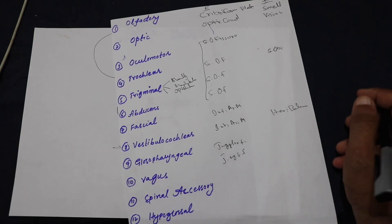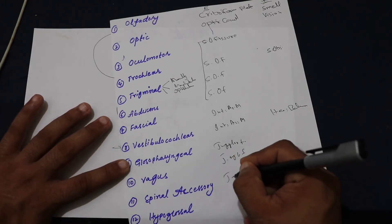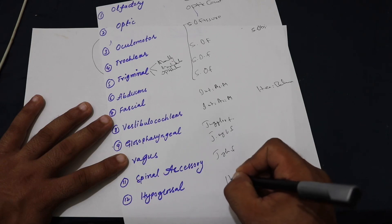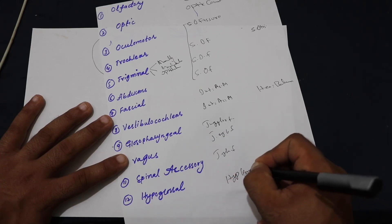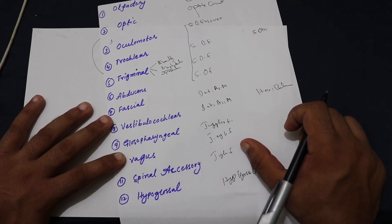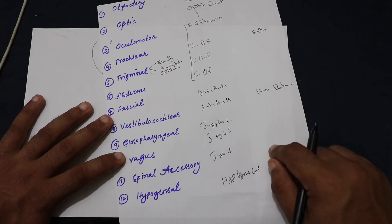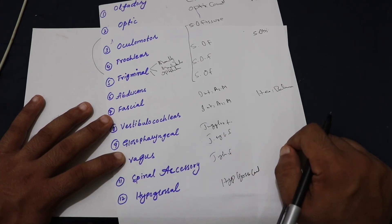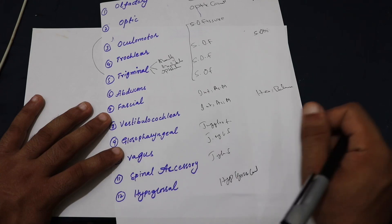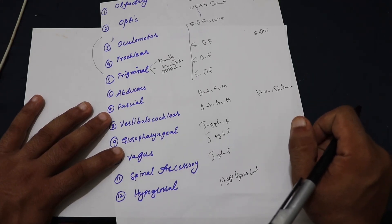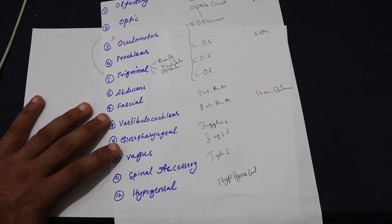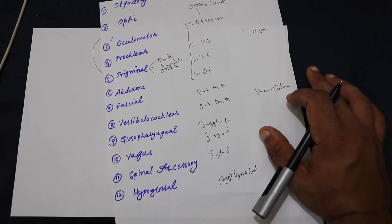Number eleven is the spinal accessory nerve, which also exits from the jugular foramen. It supplies the trapezius and sternocleidomastoid muscles, and a few fibers run towards CN X to supply some viscera. Number twelve is the hypoglossal nerve, which exits from the hypoglossal canal. It is a motor nerve (GSE) and supplies the intrinsic and extrinsic muscles of the tongue, except the palatoglossus.